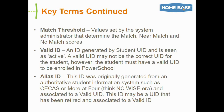A few more key terms: the match threshold is a numeric value between 0 and 100 that's created by the system and is used by UID for its matching process. The valid ID is also generated by the UID system and is seen as the active ID for a student. Just a note — the valid ID may not be the correct ID; an example would be if the same student has multiple UID records inside the system.